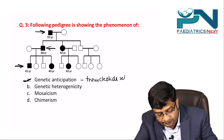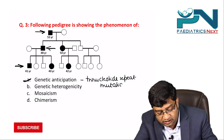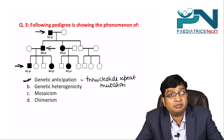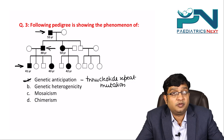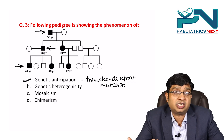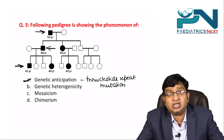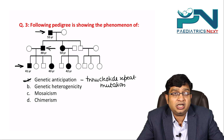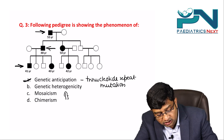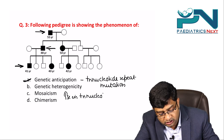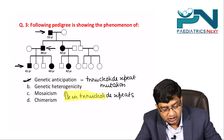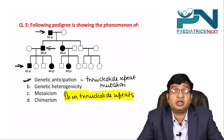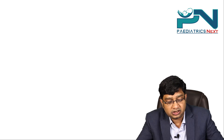Genetic anticipation is seen in trinucleotide repeat mutations — for example, Fragile X syndrome, spinocerebellar ataxia, Friedreich's ataxia, Huntington's chorea, and myotonic dystrophy. As generations progress, two things happen: severity increases and age of onset becomes earlier, both due to an increase in the number of trinucleotide repeats.